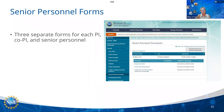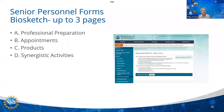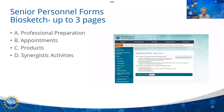The first form is called the biosketch, and for each person it can be up to three pages. It describes the professional preparation, the person's current position, any products — meaning publications, websites, training manuals, anything related to your project that is published and available to the public — and section D, synergistic activities. There is an NSF fillable form you can download and fill in for each PI, co-PI, or senior personnel. Please note that if you're working with an external evaluator, that person's biosketch will be uploaded into other supplementary documents.